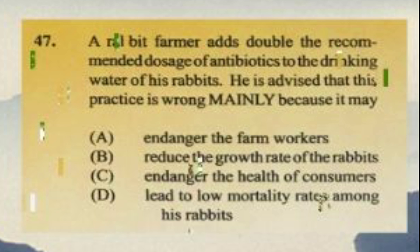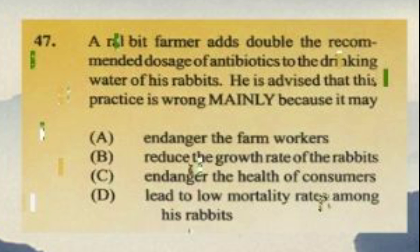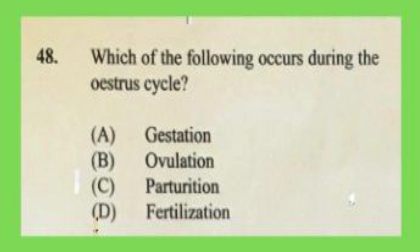Question number forty-seven: a rabbit farmer adds double the recommended dosage of antibiotics to the drinking water of his rabbits. He is advised this is wrong mainly because it may A) endanger farm workers, B) reduce growth rate of rabbits, C) endanger the health of consumers, D) lead to low mortality rate among rabbits. The answer is C, endanger the health of consumers.